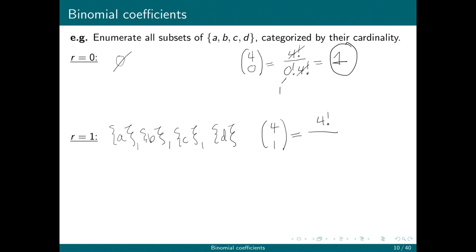4 factorial divided by 1 factorial, because 1 is r, and then n minus r is 3 factorial. Remember, we can write 4 factorial as 4 times 3 factorial. 1 factorial is just 1. We can cancel the 3 factorials, and sure enough, we've just got 4.